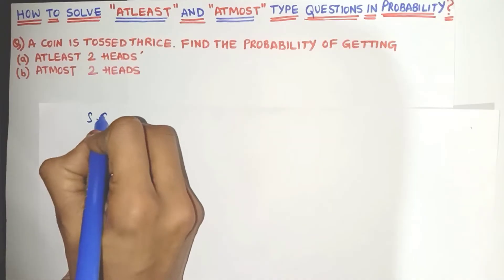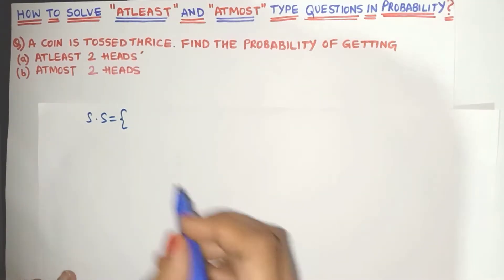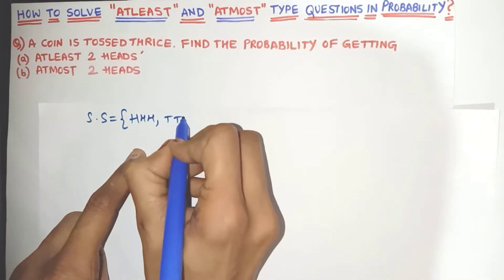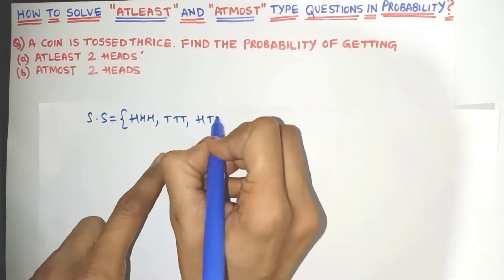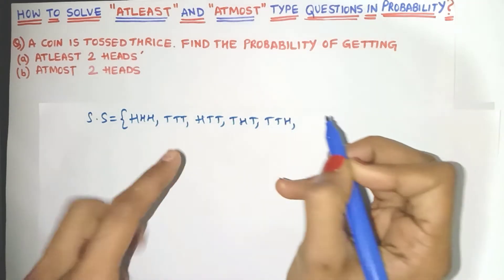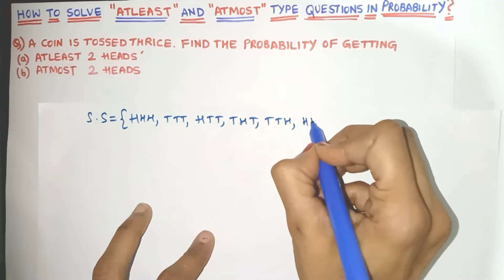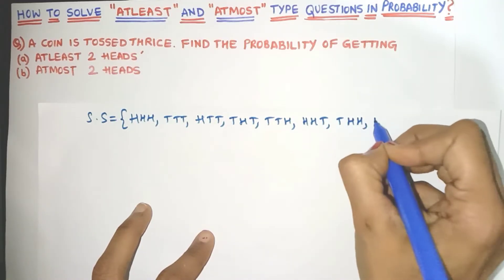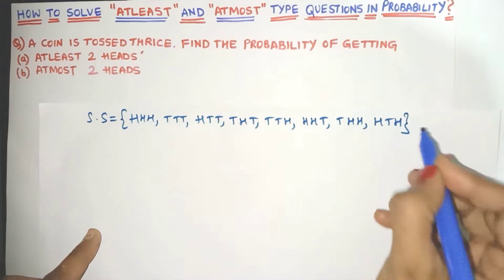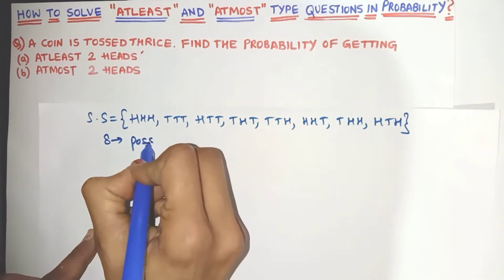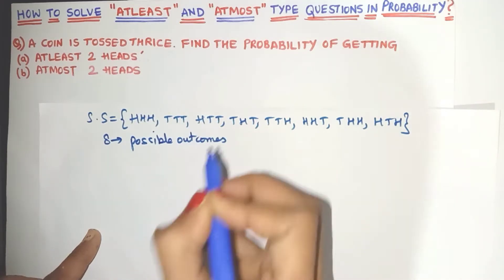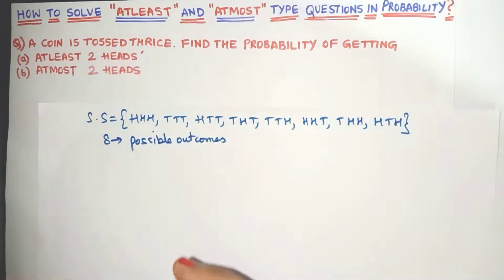Since we are tossing a coin three times, we can get all three times heads or all three times tails. We can get one head — with one head, these are the combinations. We can also get two heads — with two heads, these are the combinations. So let's count how many we got: we got eight possible outcomes. These are the total outcomes.